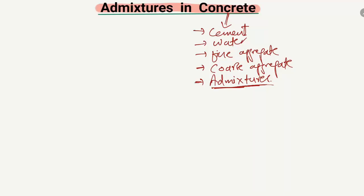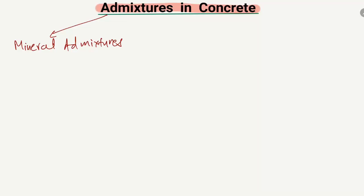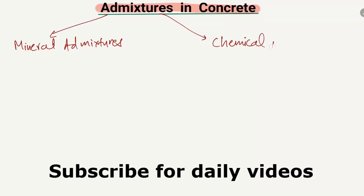There are two types of admixtures. One is mineral admixtures and the second one is chemical admixtures. These are the two most commonly used admixtures in concrete, and they have different purposes.